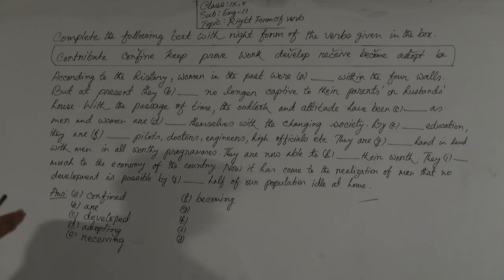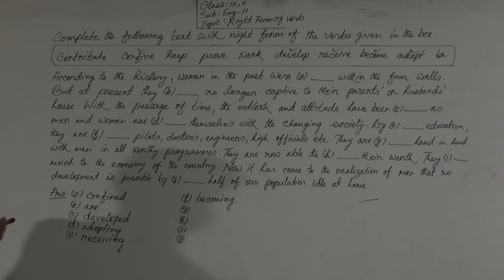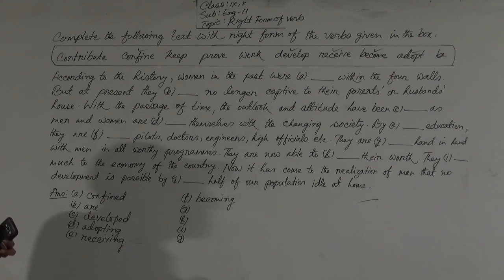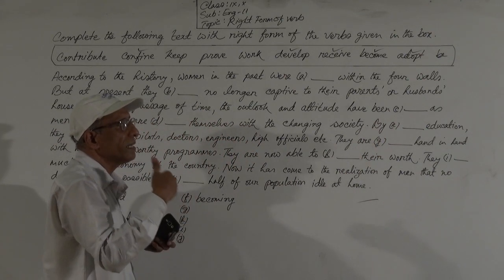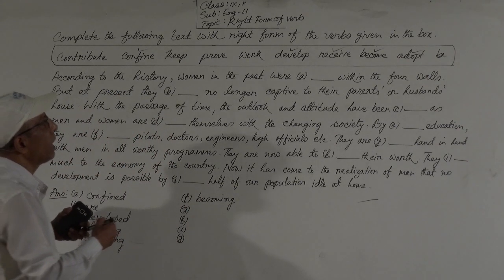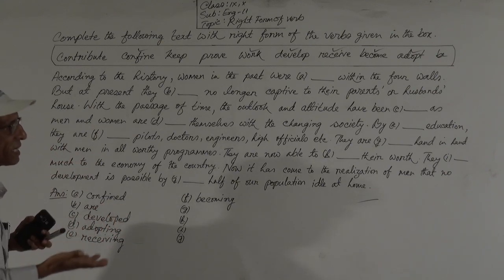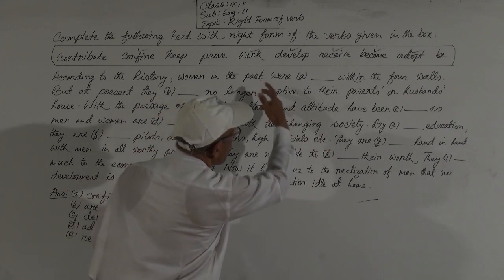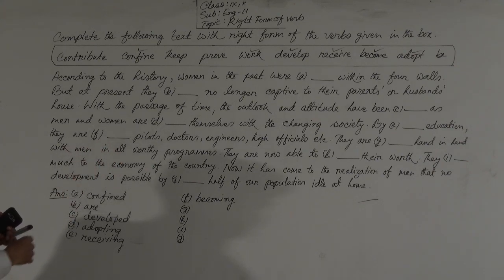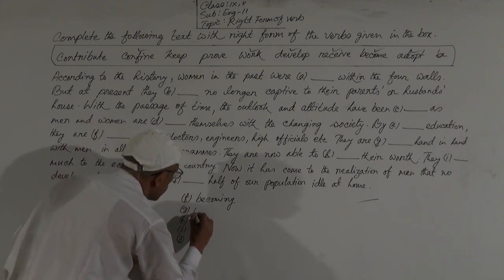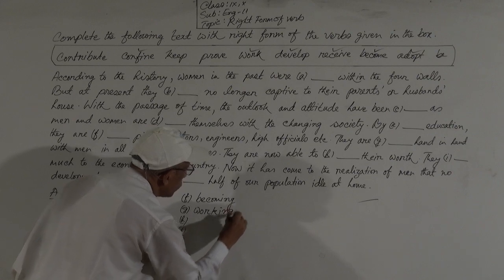They are dashed hand in hand with men in all worthy programs. This is also present continuous tense. After the subject there is a be-verb, so the verb will be in -ing form. There is a verb 'work' in the box, so it will be 'working.' Gap G: they are working hand in hand with men in all worthy programs.